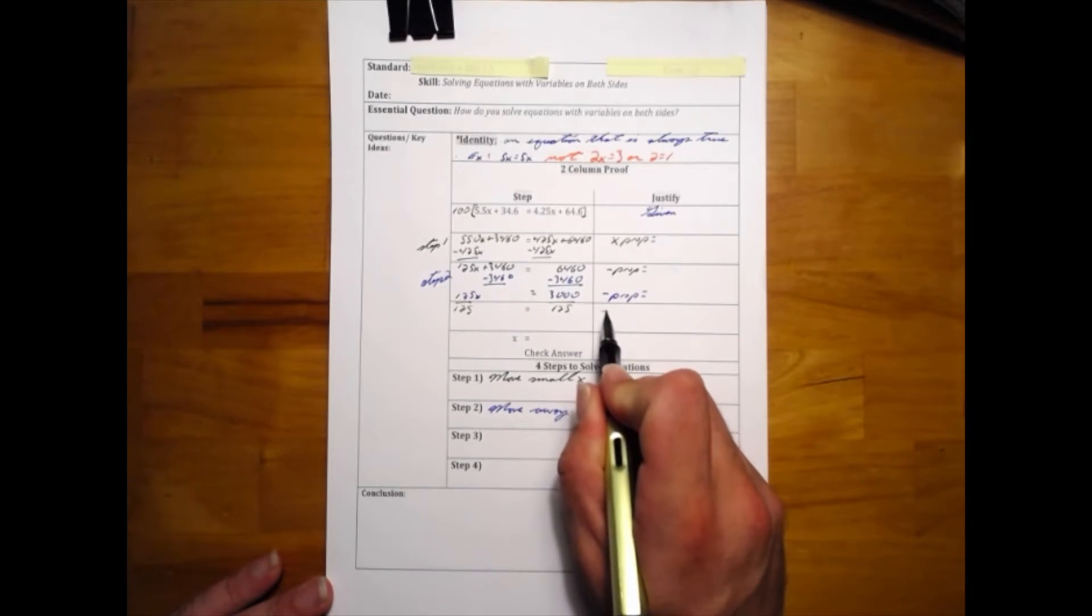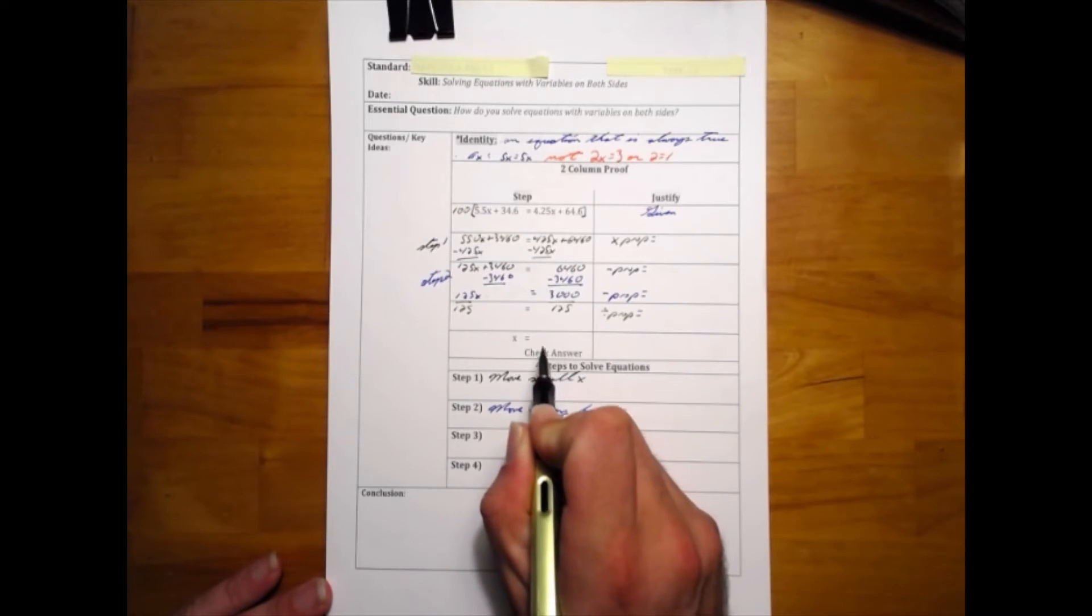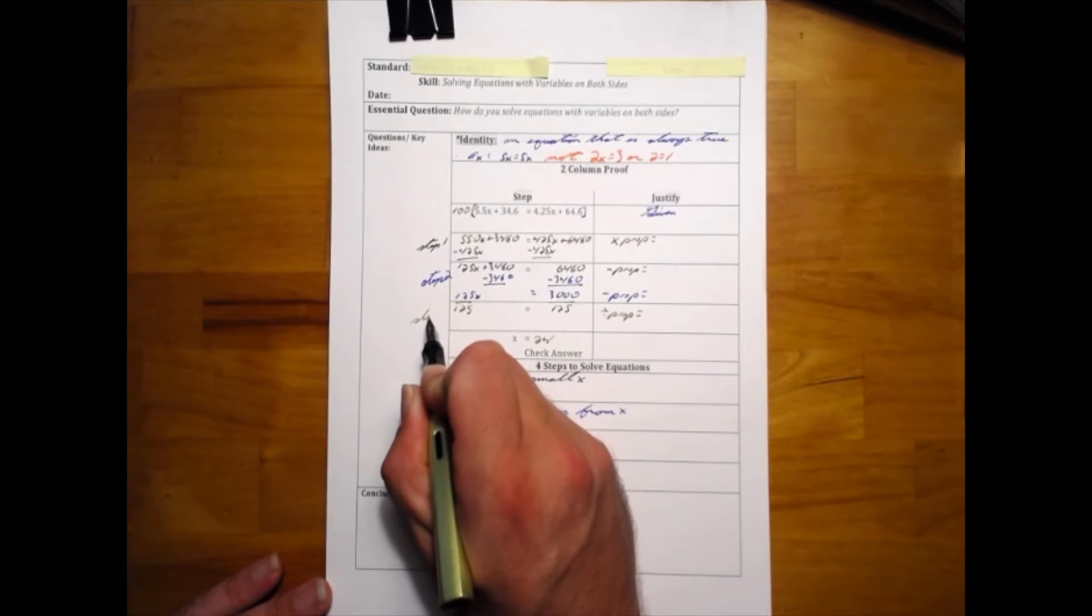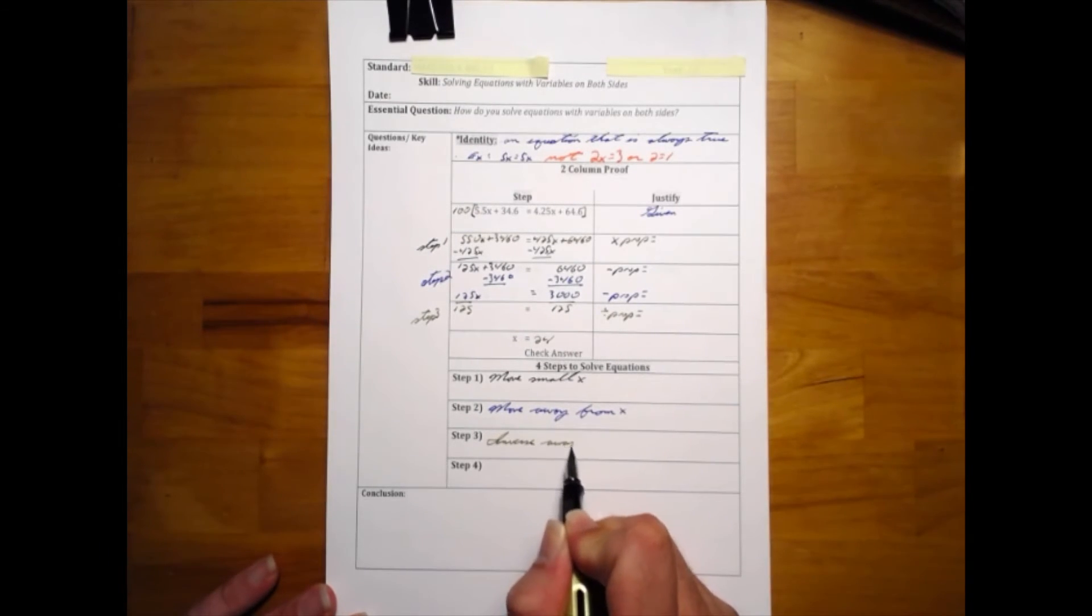This is our step three: we're always looking to do the inverse operation away from x. So we're inversing away from x, and that gave us our answer of x equals 24.